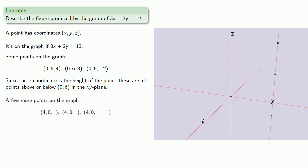How about a few more points? Well if x is equal to 4 and y is equal to 0, then 3x plus 2y does in fact equal 12, and z could be anything at all. So a few more points on the graph are 4, 0, something. And we can pick our somethings. And so we get all points above or below 4, 0 on the xy plane. So we'll go 4 along x, 0 along y, and then up or down some amount. And so we get all points above or below 4, 0 on the xy plane.